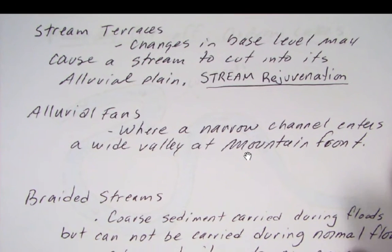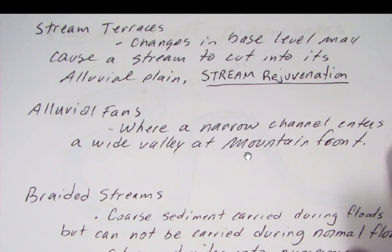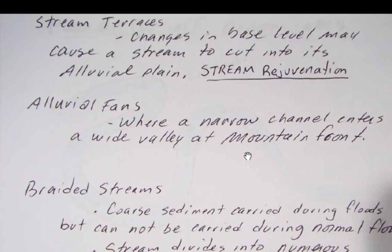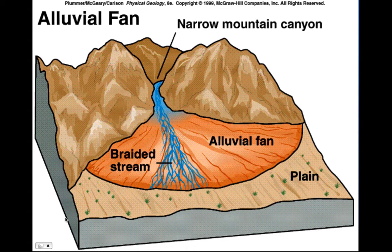Next are alluvial fans. These occur where a narrow channel enters a wide valley at a mountain front. A key thing about alluvial fans is that a narrow stream enters a much wider valley. We'll see distributaries — the water leaves the narrow channel with more energy, so it can carry the load. When it opens to the wider valley, it loses energy and drops the load.